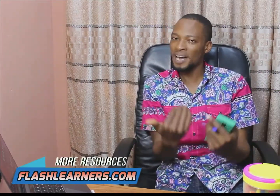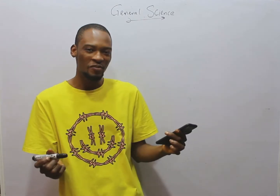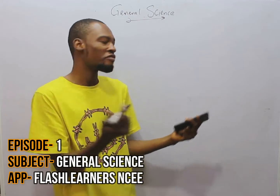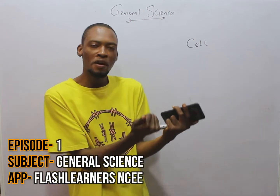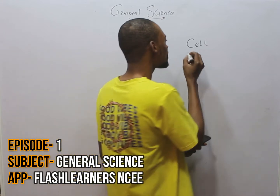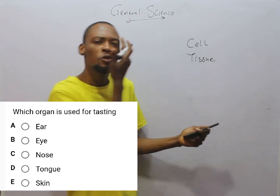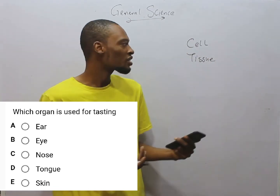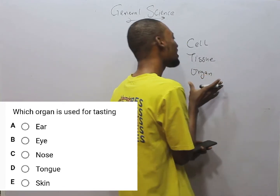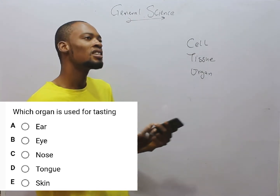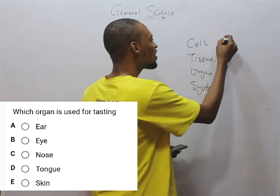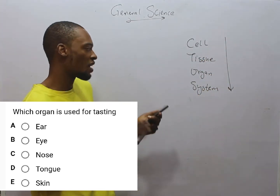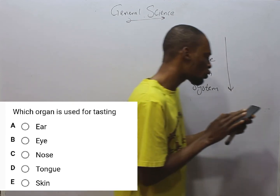If you are watching on YouTube, I'll share the link to both the mobile and desktop app below — download and let us begin. Which organ is used for tasting? Now, the simplest unit of life is the cell. When a group of cells performing the same function come together, they form what we refer to as tissue. A group of tissues coming together to perform a specific function is referred to as an organ, and organs form a system.